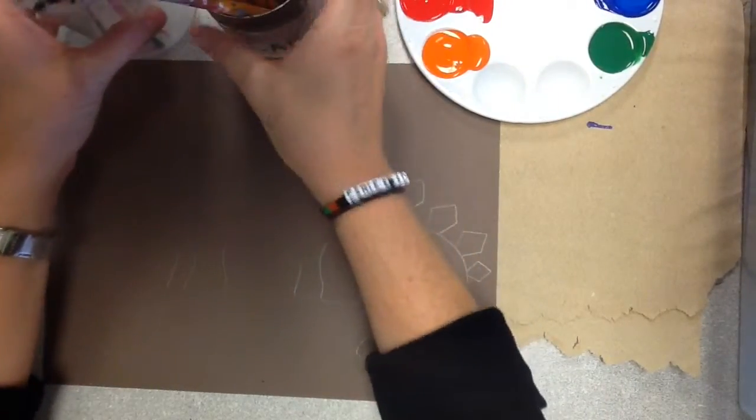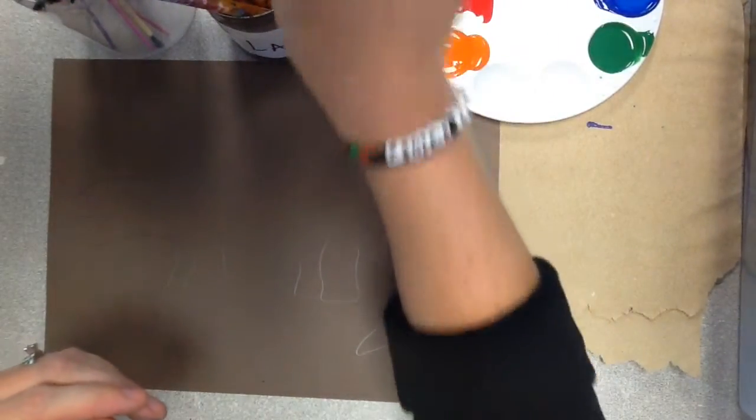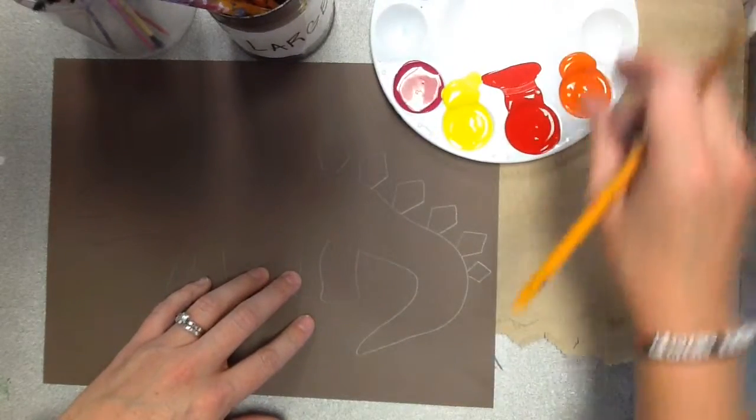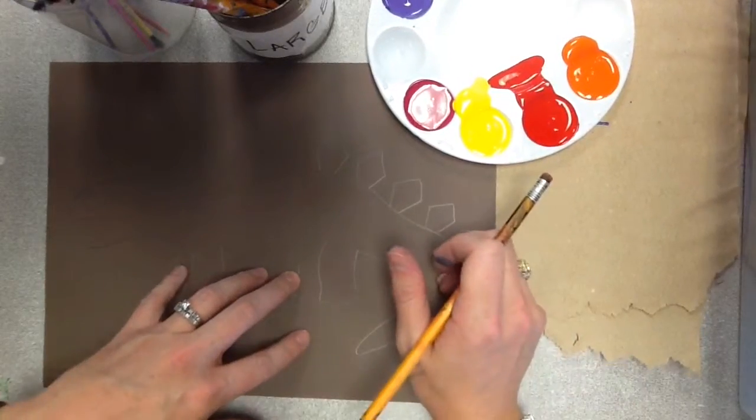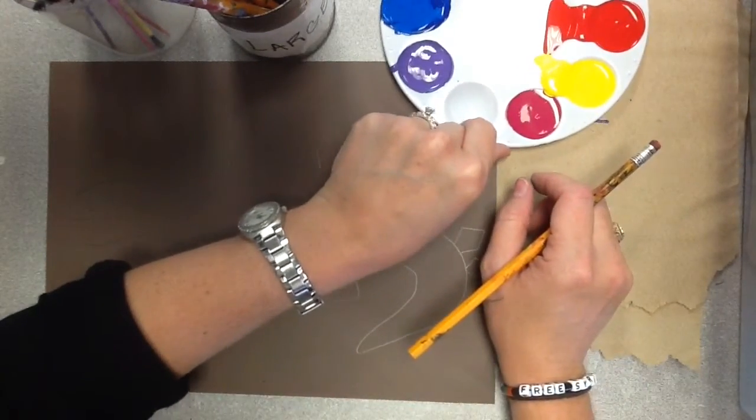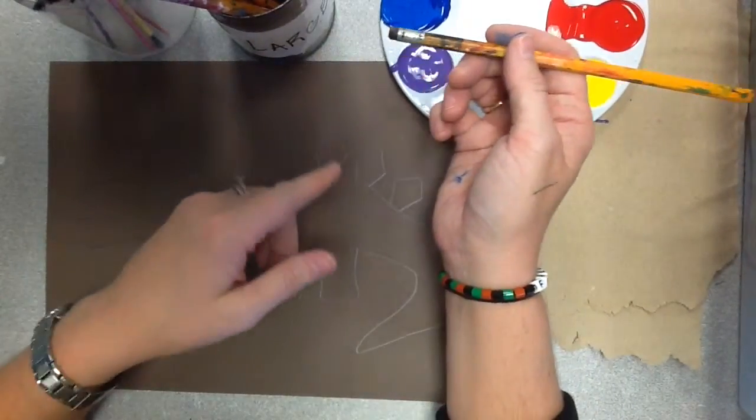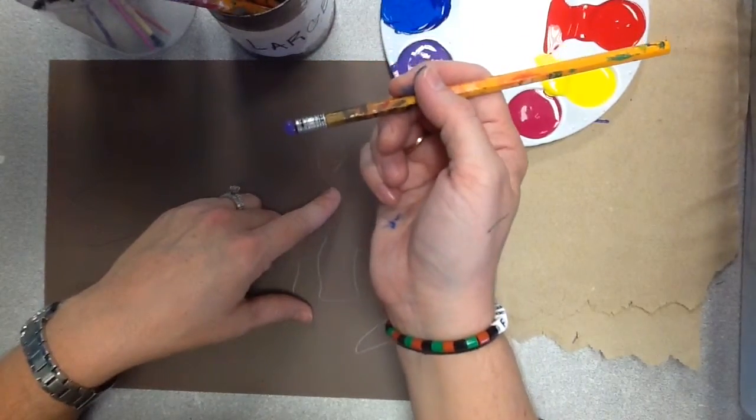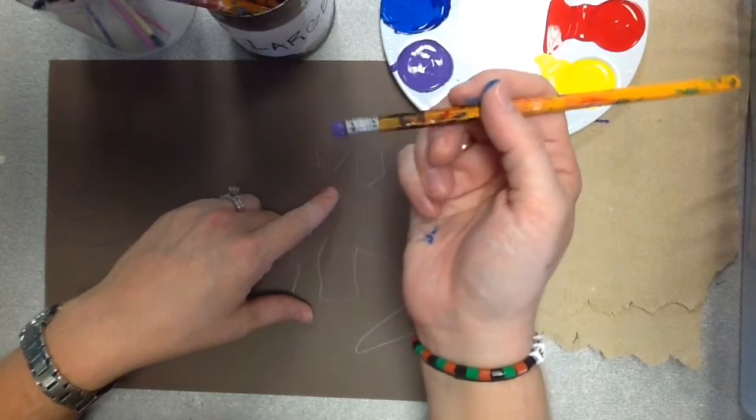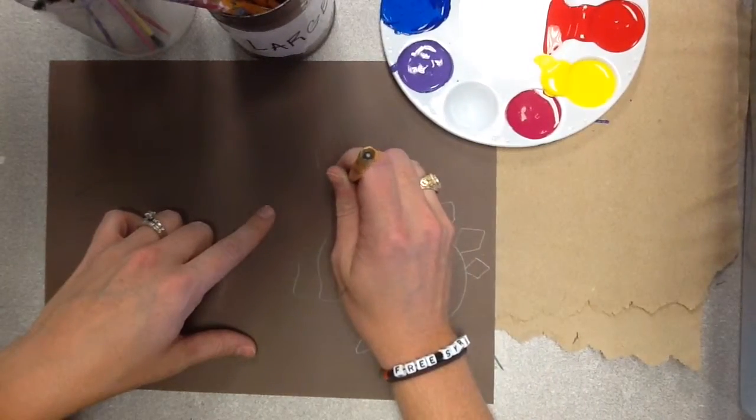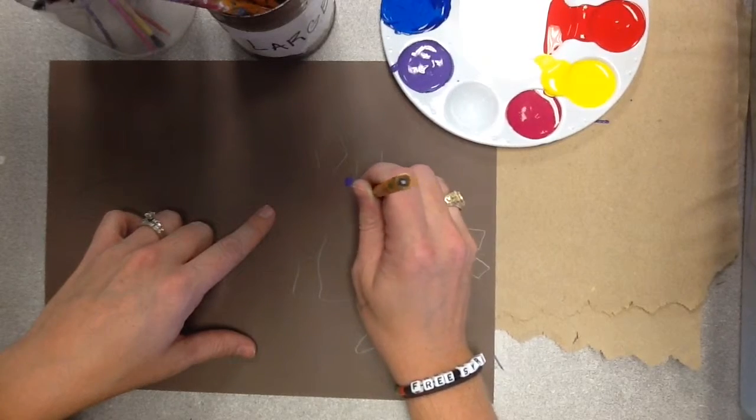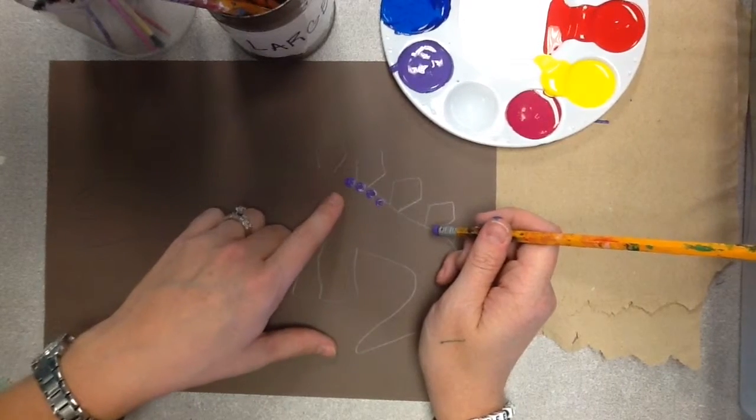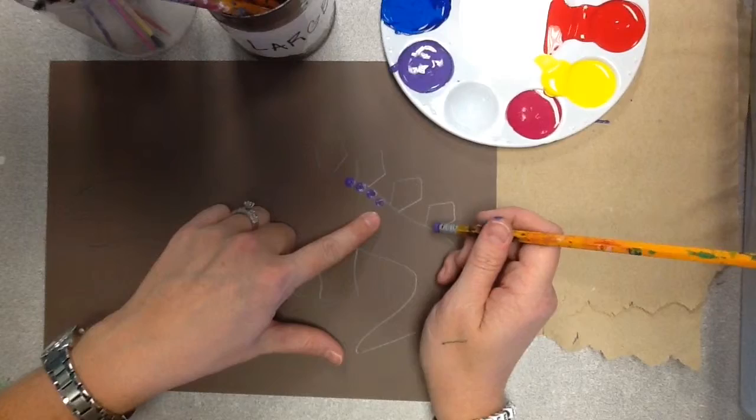So what you're going to start with is actually making the outline of your dinosaur. You need to pick a color that you want your dinosaur to be. I think I'm going to pick some purples. I'm going to turn this around so you can actually see me dipping. What you're going to do is just take the tip of the eraser and just dip it in your paint. You don't want to end up having too much paint. You want to have just enough on there that you can put it on your paper.